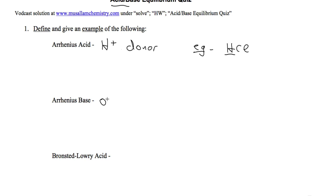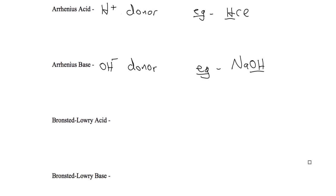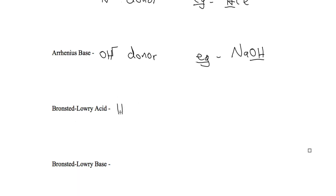An Arrhenius base is a hydroxide donor. An example of that is sodium hydroxide because it ends in hydroxide. A Bronsted and Lowry acid is the same as an Arrhenius acid, but they refer to the H-plus as a proton donor. An example is also hydrochloric acid, HCl.